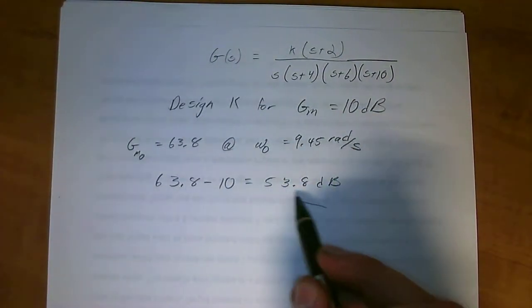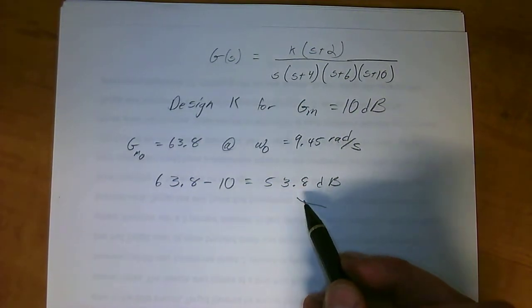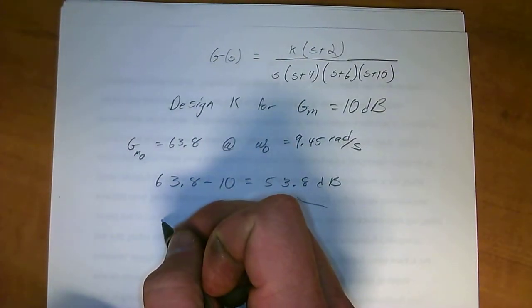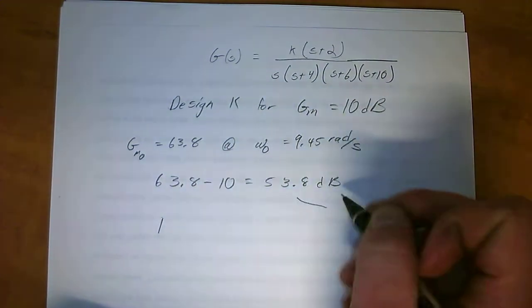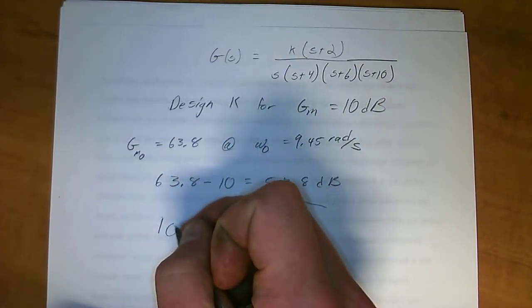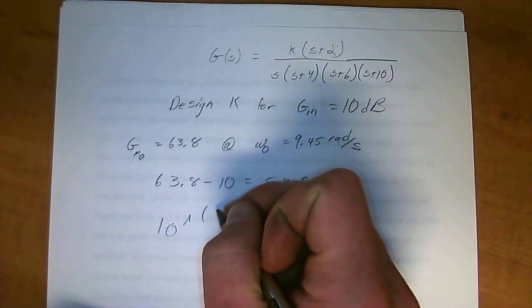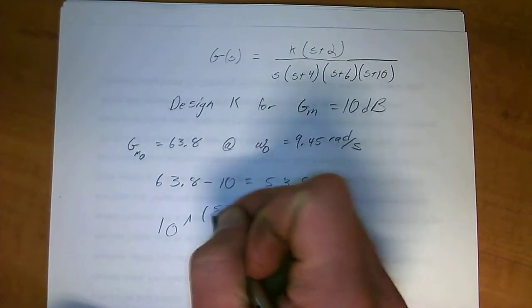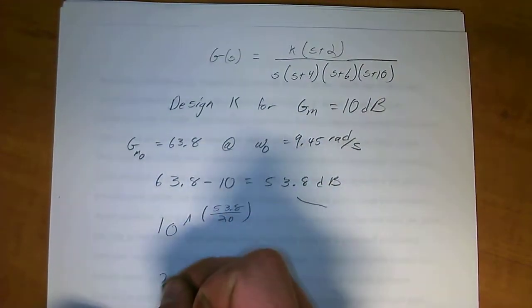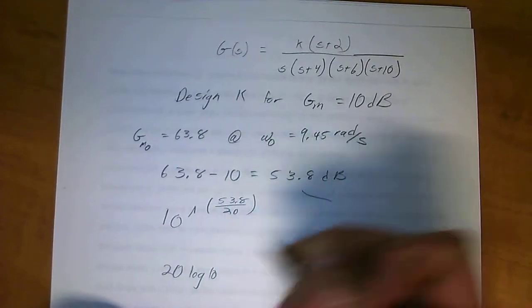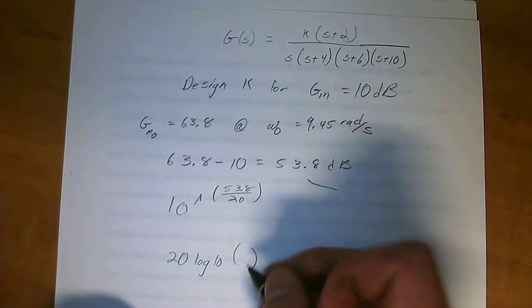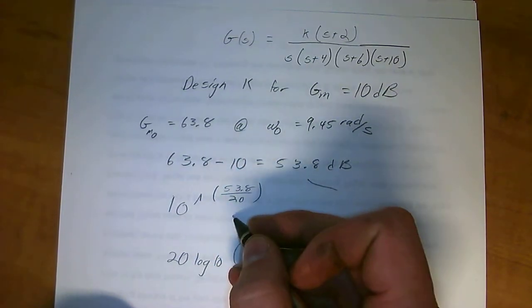Okay, so we have the shift that we need, but we need to convert that into an actual gain that we can use. In order to do that, you do a unit conversion: 10 to the power of 53.8 over 20, which comes from 20 log base 10 of a unitless value, which gives you dB. Then you solve for that and you get the gain.